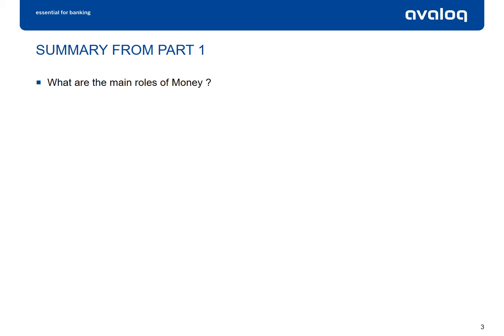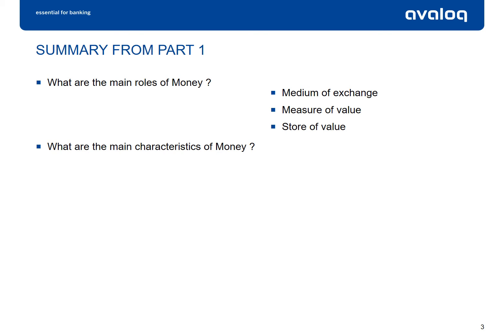Before we continue, let's have a short summary on what we have already seen. What are the main roles of money? Money is a medium of exchange. It is also a measure of value and a store of value. What are the main characteristics of money? Money is durable, divisible, transportable, and has no counterfeits.